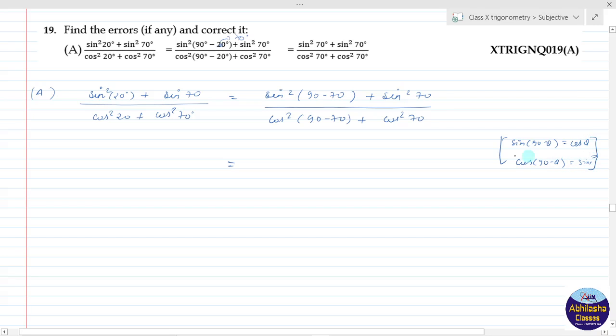So here, sin of 90 minus 70 squared becomes cos 70 squared. So we get cos squared 70 plus sin squared 70 in the numerator.